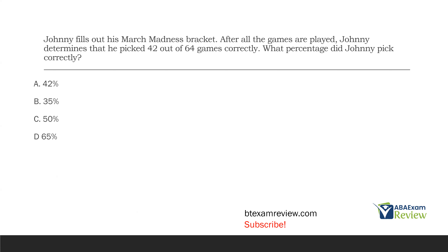For example, if your client got 8 responses correct out of a possible 10, you would divide 8 by 10, multiply by 100, and get 80%. In this case, Johnny got 42 responses correct out of 64, so 42 divided by 64, multiply by 100, and you'll get 65% — or 65.6% if not rounding.